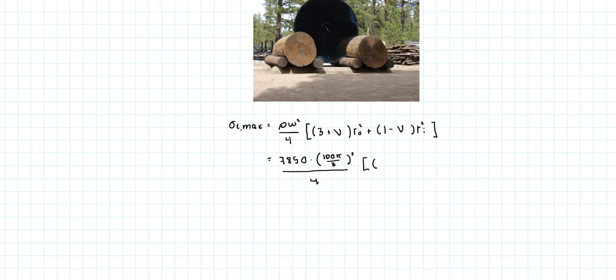Times 3 plus 0.3 times 1 squared for the outer diameter, plus 1 minus 0.3 times the inside diameter squared, which is 0.025 or 2.5 centimeters. And what you should get is 71.0 megapascals.